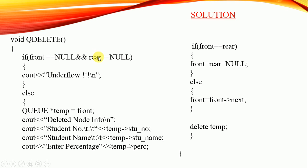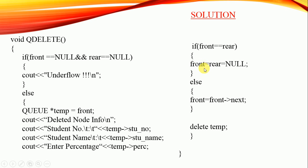While writing the QDelete function, first check if the queue contains any element. If front == NULL and rear == NULL, that means underflow — the queue has no elements. Otherwise, make a temporary pointer pointing to the front (first element), then display the deleted node's info: temp->studentNumber, temp->studentName, and temp->percentage. Now, if front == rear, meaning it's the last element, set both front and rear to null.